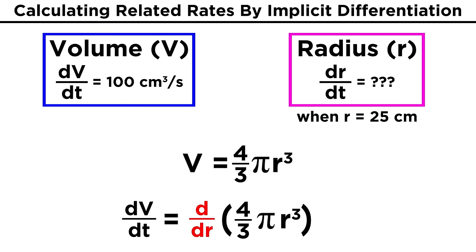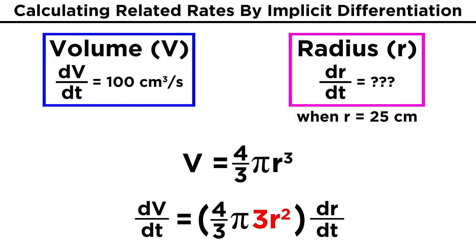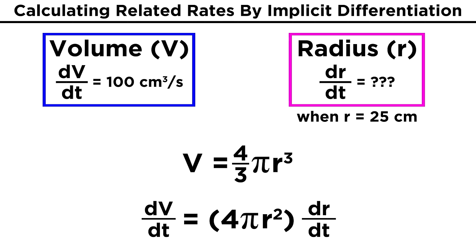So we will have to differentiate this expression with respect to R, and then multiply that by the derivative of R with respect to T, or DR over DT. The derivative with respect to R is easy. We just bring the three down here and change the three to a two, giving us four pi R squared. And then, that must be followed by DR over DT.